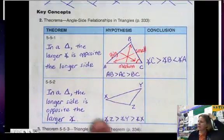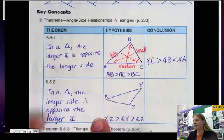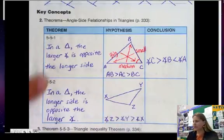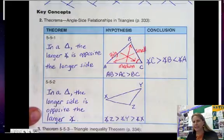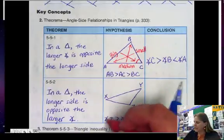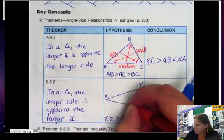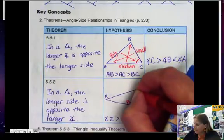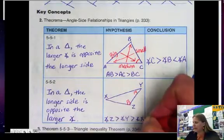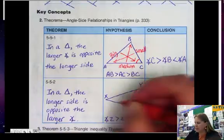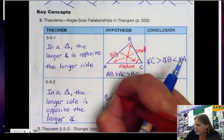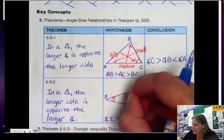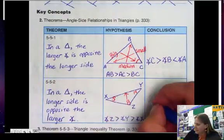The next theorem is like this one, except in reverse. In a triangle, the longer side is opposite the larger angle. So if I'm told that angle Z is the biggest, angle Y is the medium, and angle X is the smallest, then across from the biggest angle is side XZ — so XZ is my biggest side.